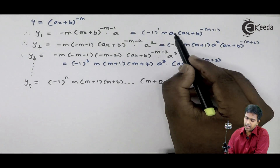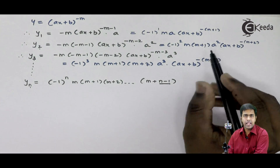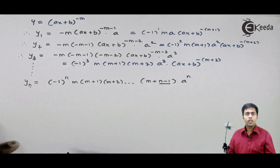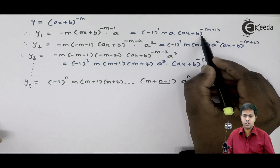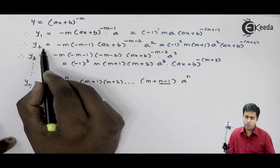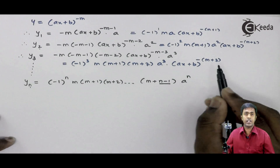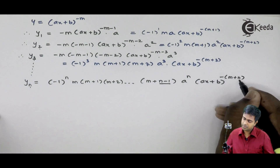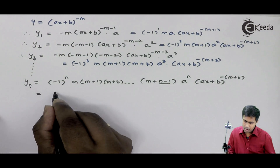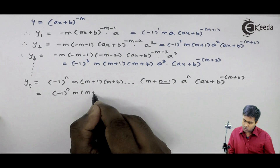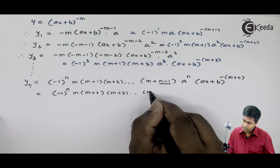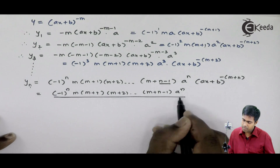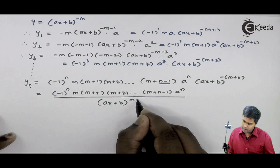In y1 we get a^1, in y2 we get a^2, in y3 we get a^3, so in yn we get a^n. Similarly, in y1 we get (ax + b) raised to minus (m+1), in y2 minus (m+2), in y3 minus (m+3), so in yn we get (ax + b) raised to minus (m+n). Putting it all together, yn equals (−1)^n times m(m+1)(m+2)···(m+n−1) times a^n, divided by (ax+b)^(m+n).